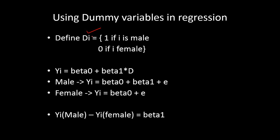The dummy variable d_i takes one if the employee is male, and zero if the employee is female. Wherever we have male and female as gender, we simply replace them with one and zero. Now, the question is: do we always have only two categories? No — we can have multiple categories, more than two, and we'll talk about how to handle that case.